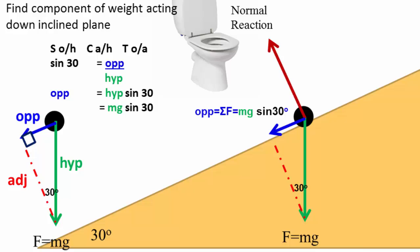Likewise, the component of the weight which is acting perpendicular to the surface is going to be mg cos theta.